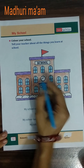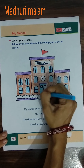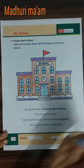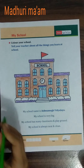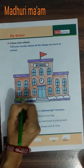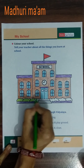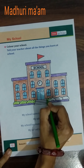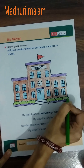Slowly slowly you can also do like this only. Now take another color for the window and door. Now we use next color — for the window and the door we take sky blue color. Sky blue color we will use for the window and the door.